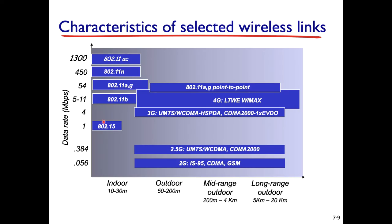Looking at data rate and range for wireless technologies: all 802.11 Wi-Fi standards operate well within about 30 meters indoors, though outdoor range can extend up to 20 kilometers. In practice, small cells are about one kilometer or less. Cellular technologies — 2G, 3G, 4G, and now 5G — cover wider areas. Wi-Fi 802.11AC currently supports nearly 1 gigabit per second.